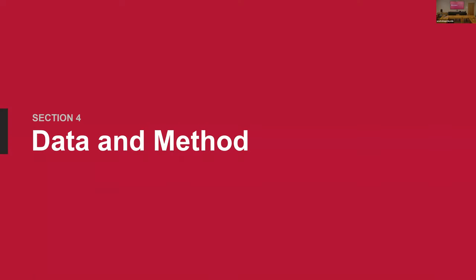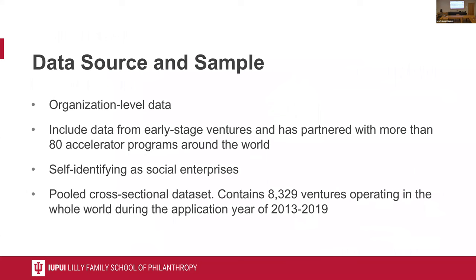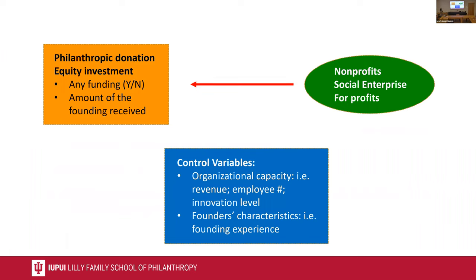We tested this hypothesis with empirical data from the Entrepreneurship Database Program, which collected organizational-level data from early-stage ventures around the world. Our sample is a cross-sectional dataset containing more than 8,000 observations between the years 2013 and 2019. Here are the measures of our key variables. For dependent variables, we use both binary variables and numerical variables in terms of philanthropy donations and equity investments.